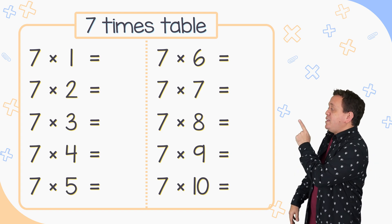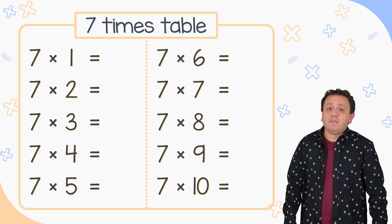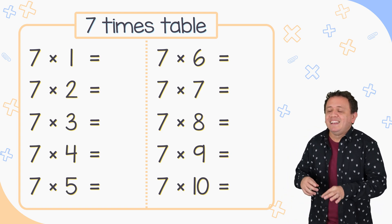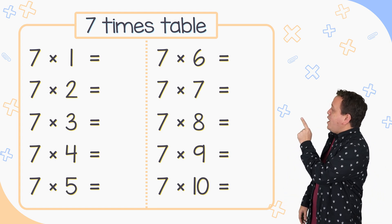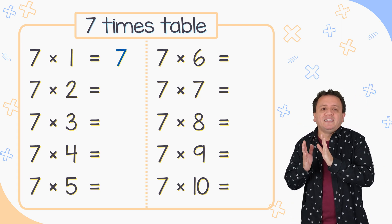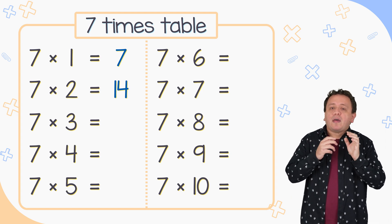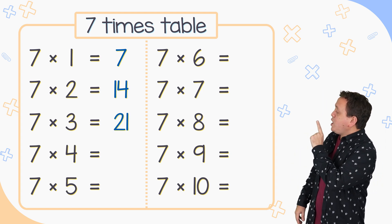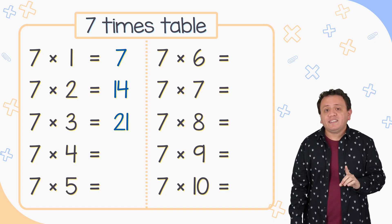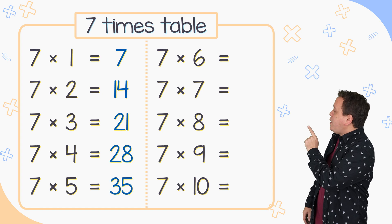Pay attention to the 7 times table. My students always say that this multiplication table is very difficult, but I don't think so. Let's start: 7 times 1 is equal to 7. 7 times 2 equals 14. 7 times 3 equals 21. 7 times 4 equals 28. 7 times 5 equals 35.